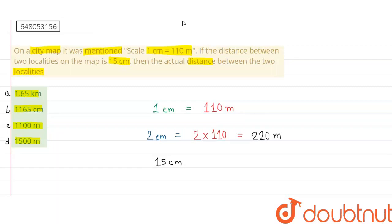दोस्तों, अगर दो places के middle में distance 15 cm दिखाया जा रहा है map में, तो उन दोनों के middle का actual distance क्या हो जाएगा? 15 into 110 m. इसका मतलब क्या होगा? 1650 m.